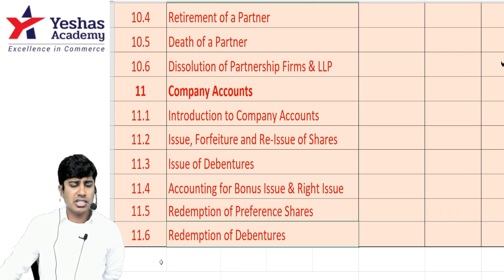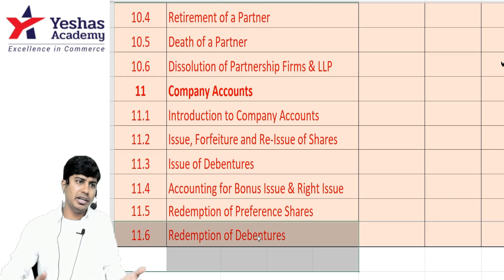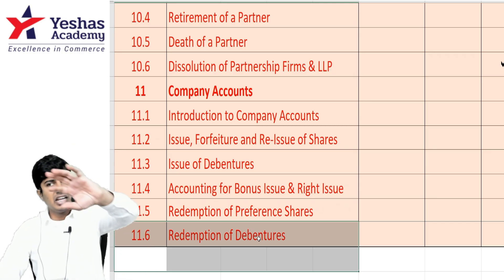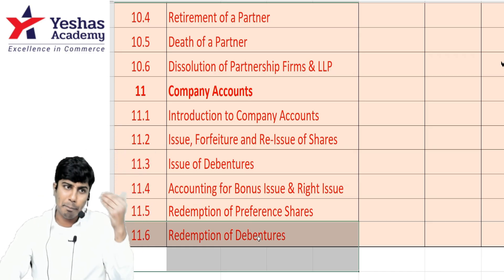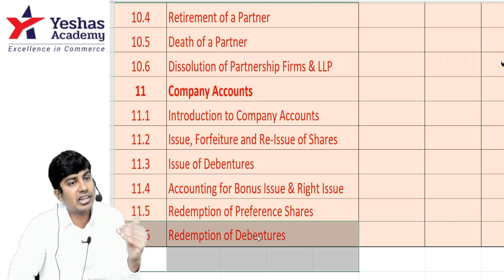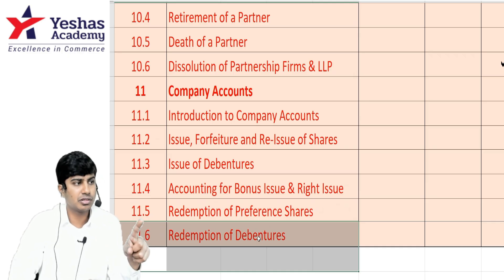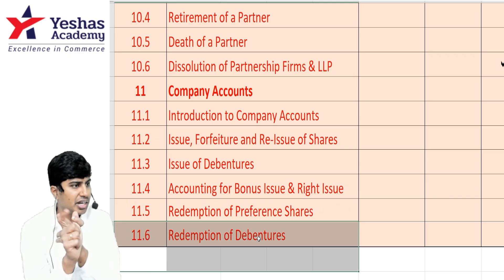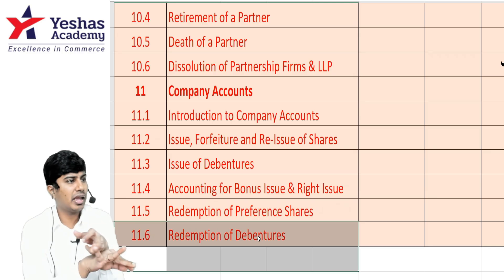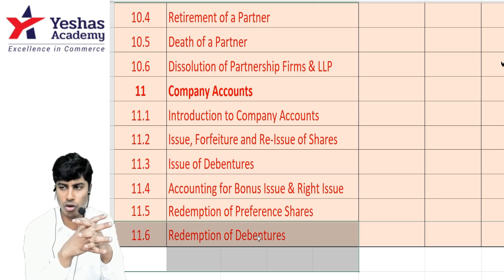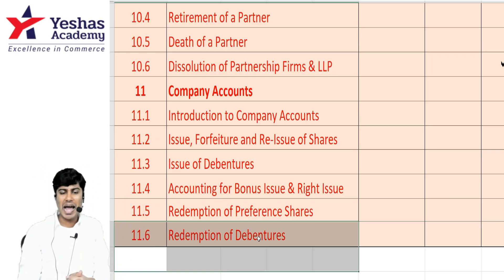For redemption of debentures, remember: DRR is to be maintained at 10 percent; DRRI is to be maintained at 15 percent. If not maintained, first transfer from general reserve to create DRR, then take from cash to create DRRI. Then pass the entry: debentures to debenture holders. If there is a premium, debit it. Pay the debenture holder — debenture holders to cash. The order is: (1) create DRR; (2) check DRR and DRRI; (3) sell DRRI; (4) redeem debentures; (5) pay debenture holders and transfer premium to P&L; (6) DRR that is no longer required is transferred back to general reserve.